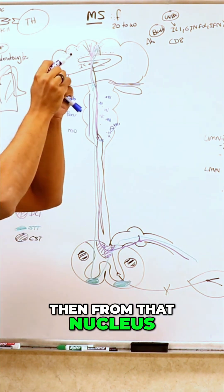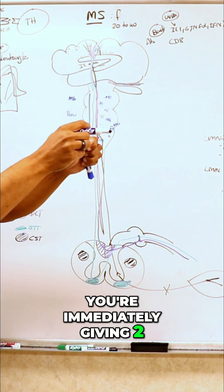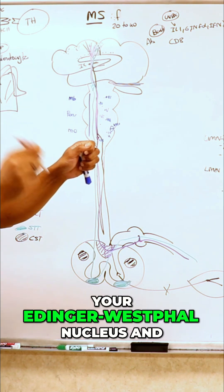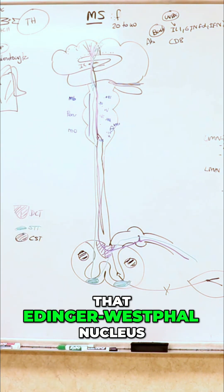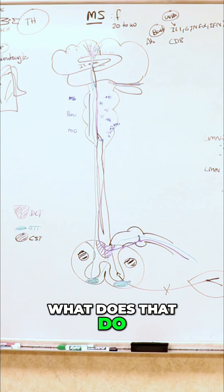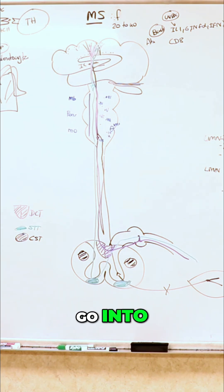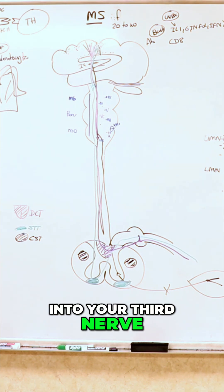Then from that nucleus, you're immediately giving two nerves to go to your Edinger-Westphal nucleus. And that Edinger-Westphal nucleus, what does that do? From here it's going to go into your both sides into your third nerve.